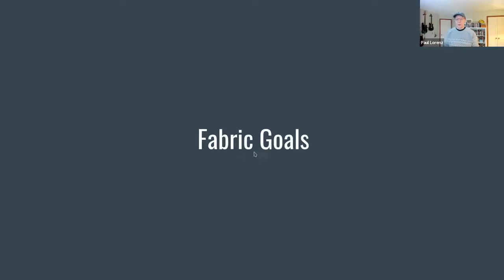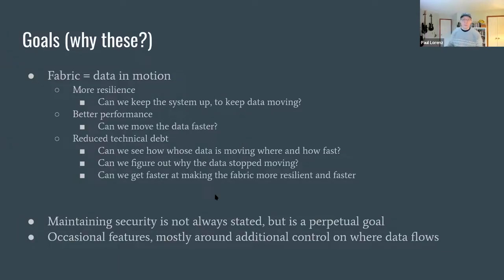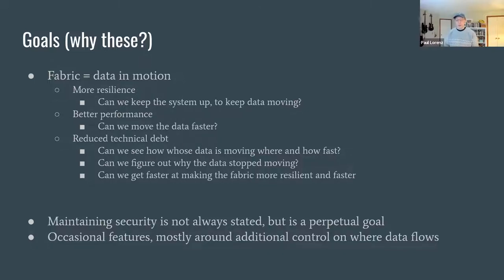First, I'll talk about what our goals are for the fabric in the near term: more resilience, better performance, and reduced technical debt. The fabric is basically data in motion — it moves data around. The idea is: can we keep the data moving with more resilience? Can we move the data faster? Can we see whose data is moving where and how fast, and figure out why the data stopped moving? And maintaining security is not always stated, but it's a perpetual goal. There will be occasional features around controls over where the data flows.